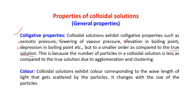The reason colligative properties are smaller in colloidal solutions compared to true solutions is because the number of particles in colloidal solution is less due to agglomeration and clustering. Next is color. The colloidal solution exhibits color corresponding to the wavelength of light that gets scattered by the particles. It changes with the size of the particle.